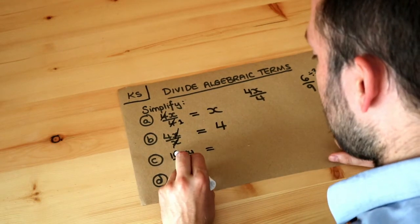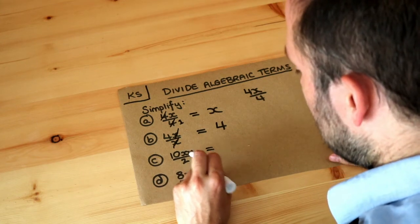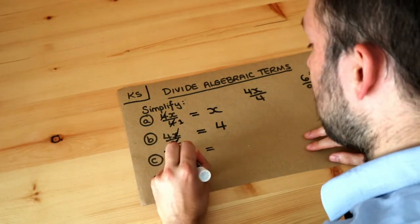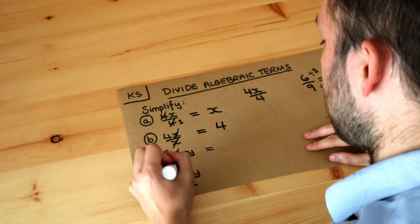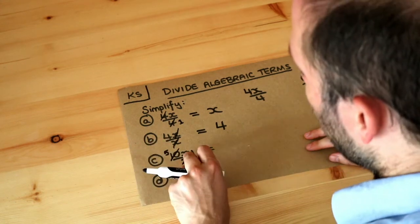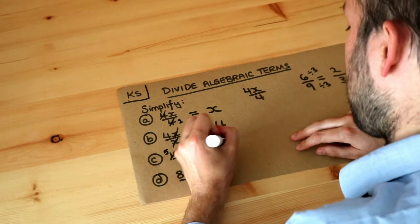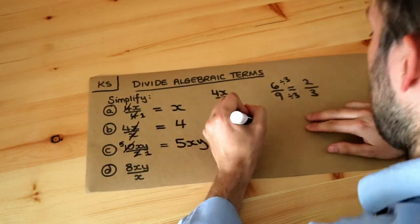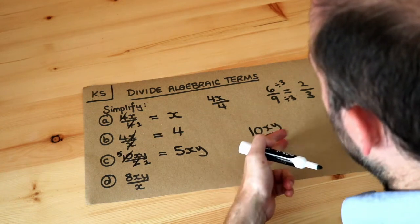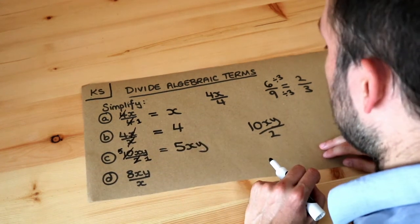Now what about this one? There are no variables at the bottom, so I can't cross out any of the letters. But ten and two — we could divide them both by two. So I can cross out the ten and put five, because I'm dividing it by two. And when I divide two by two, I just get one. Remember, if we've got one at the bottom, dividing by one has no effect, so we're just left with five xy. If we think about it: if we've got ten lots of xy and we divide it by two, then we have five lots of xy. So the answer is five xy.